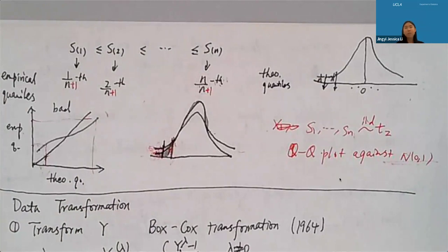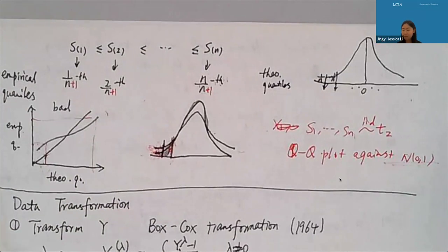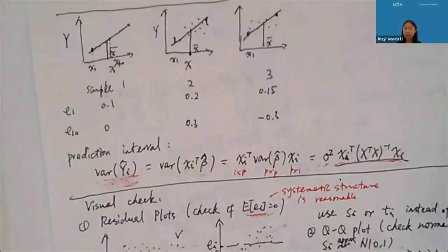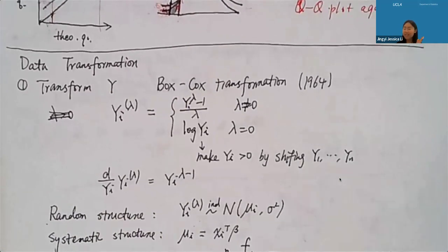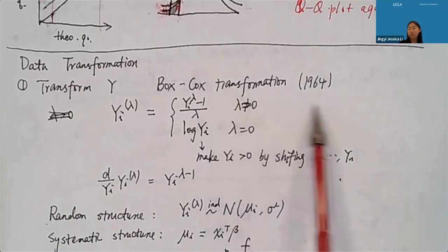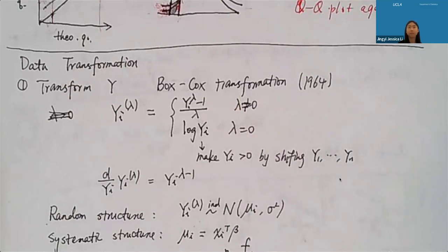We can stop here today — we've basically finished the diagnostics. Next time, we'll talk about what to do when the mean function is problematic, for example when residuals show a trend along y_hat. One approach is to transform y using a nonlinear monotone transformation so the linear model fits better — that's the Box-Cox transformation. See you at the regular time and location on Wednesday.